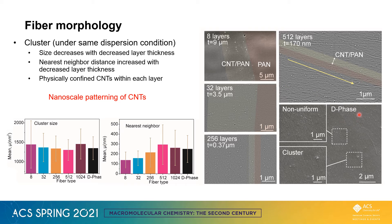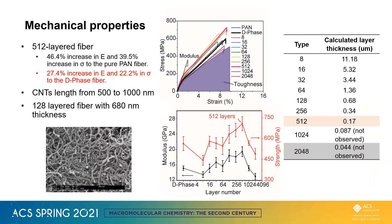Also, for the disperse-phase fiber, where there was no layer morphology, non-uniform clusters were observed. A direct result of the layered fiber is that the 512-layer fiber showed increases in modulus and strength compared to the disperse-phase fiber at the same carbon nanotube loading. As layer thickness decreased beyond the length of the carbon nanotube, we observed this increasing trend in mechanical properties.